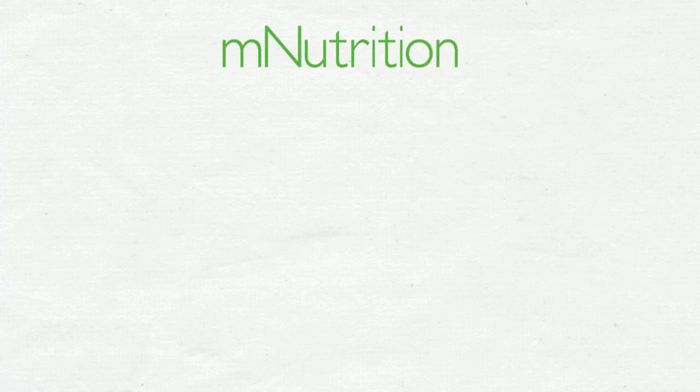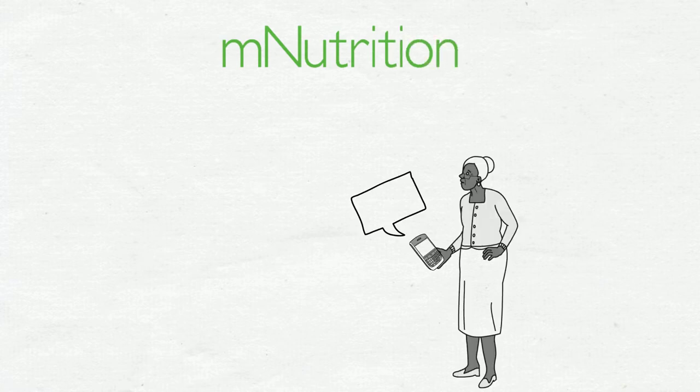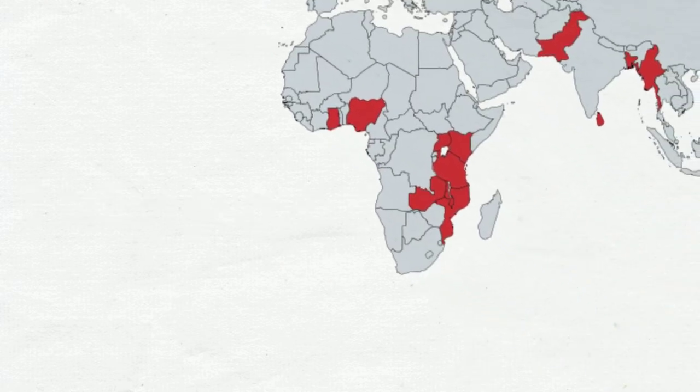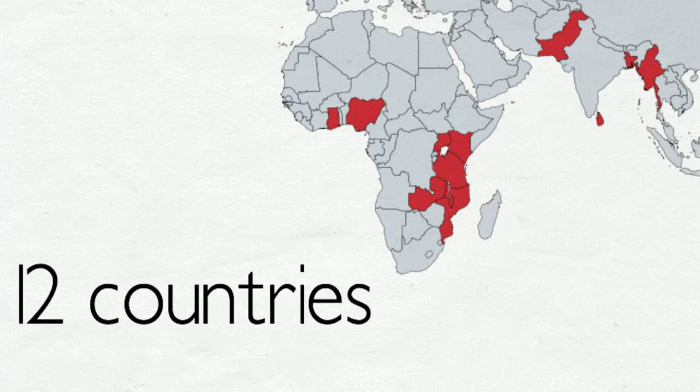mNutrition decided to do exactly that: to use the mobile channel and reach out to over 3 million people in 12 African and Asian countries, providing them with useful advice to help them improve their nutrition.